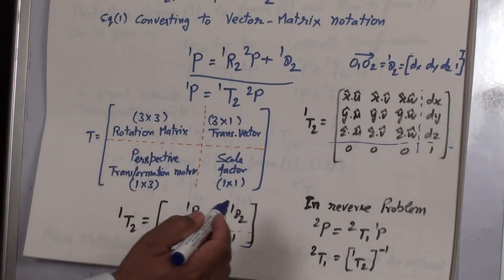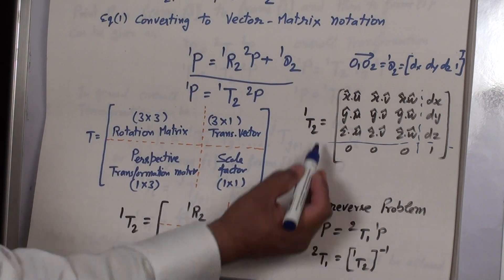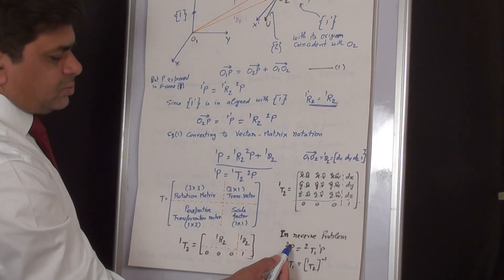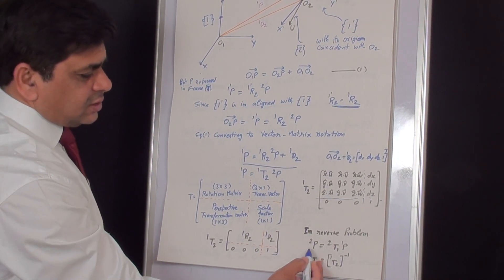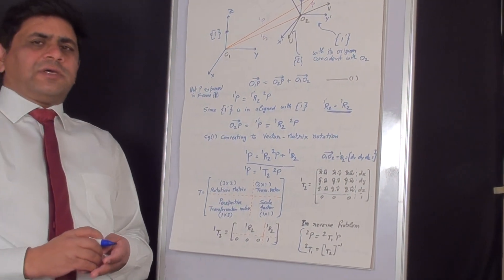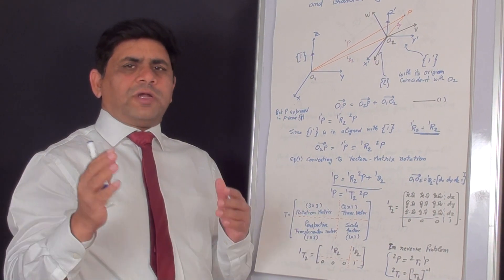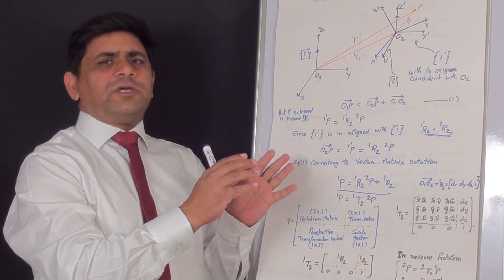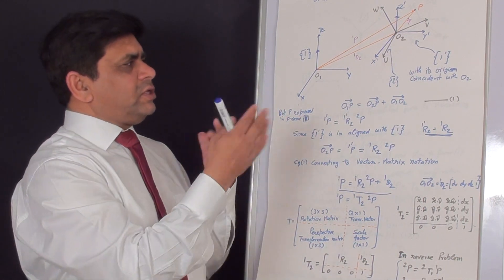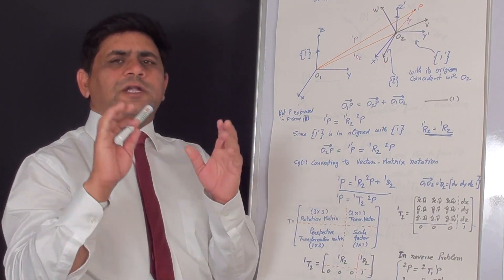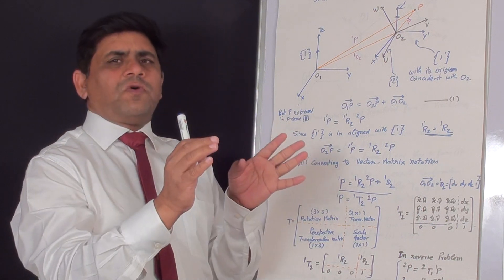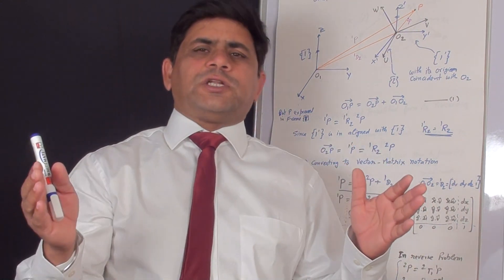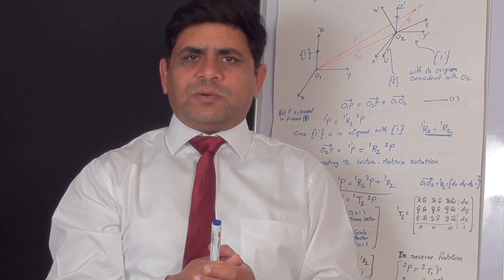For the reverse problem, if the position of point p with respect to Frame 1 is known and you need to find its position with respect to Frame 2, the equation can be rearranged to compute this. This mapping between rotated and translated frames is the key result. Since frames assigned to a manipulator can show pure translation as well as rotation, the 4x4 homogeneous transformation matrix allows you to find both orientation and translation together.